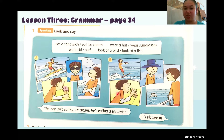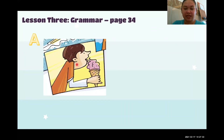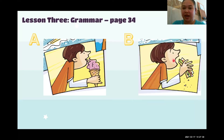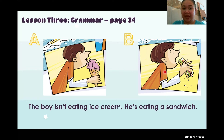You have to look at the boy eating ice cream and eating a sandwich. In picture A we have the boy eating ice cream, and in picture B we have the boy eating a sandwich. The sentence is: 'The boy isn't eating ice cream. He's eating a sandwich.' Is it picture A or picture B? The answer is picture B.